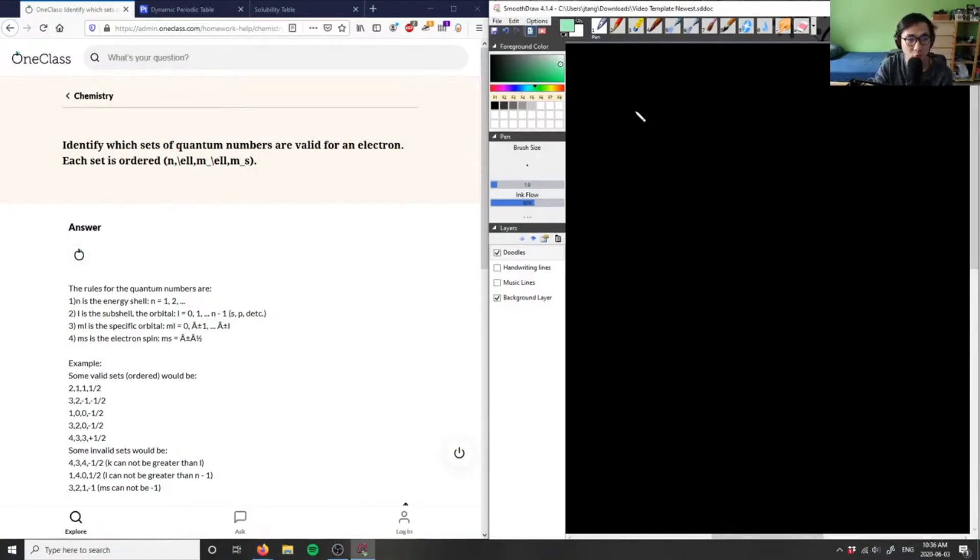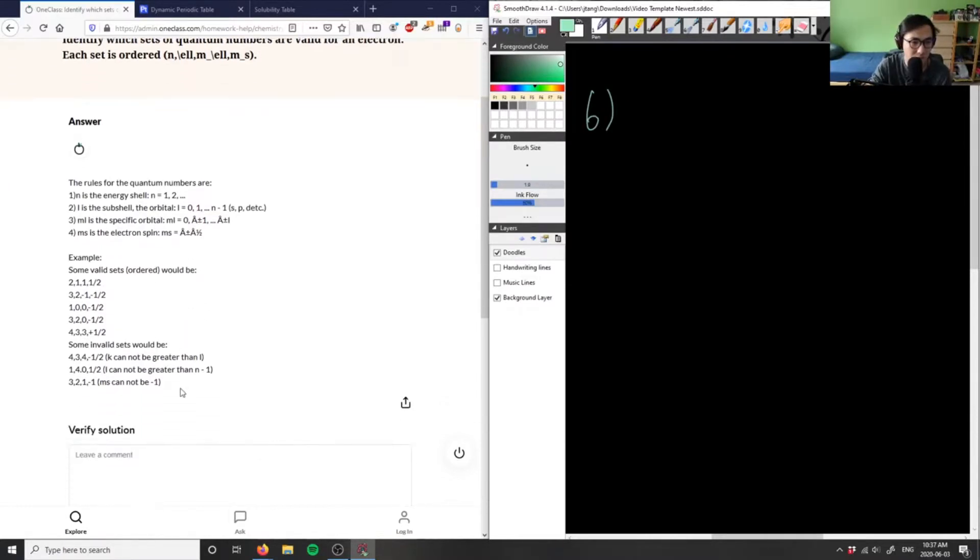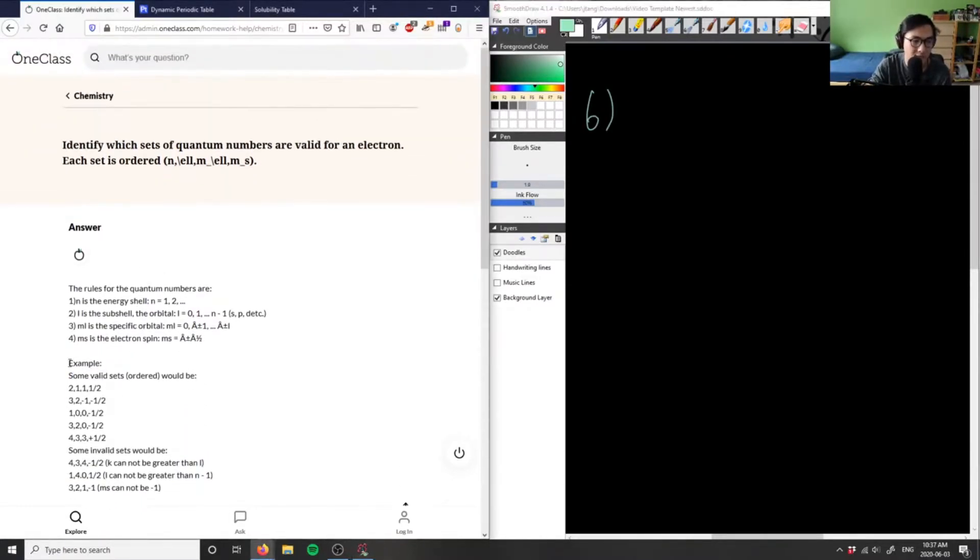Number six: identify which sets of quantum numbers are valid for an electron. Each set is ordered. There's not really a question here because I don't know which element I'm focused on, but this is number six. I'm going to see if I can reverse engineer this or give you some examples here.